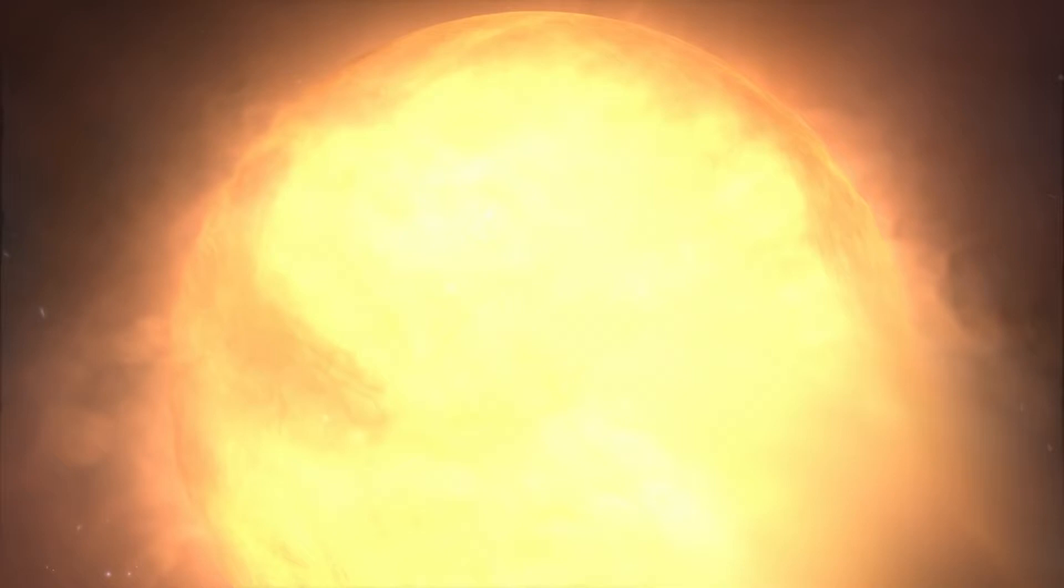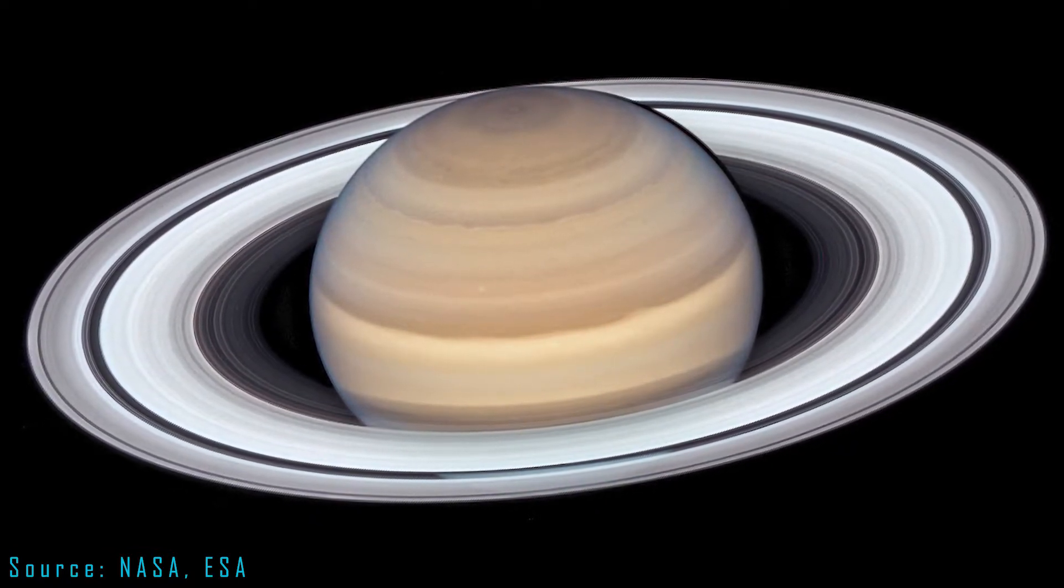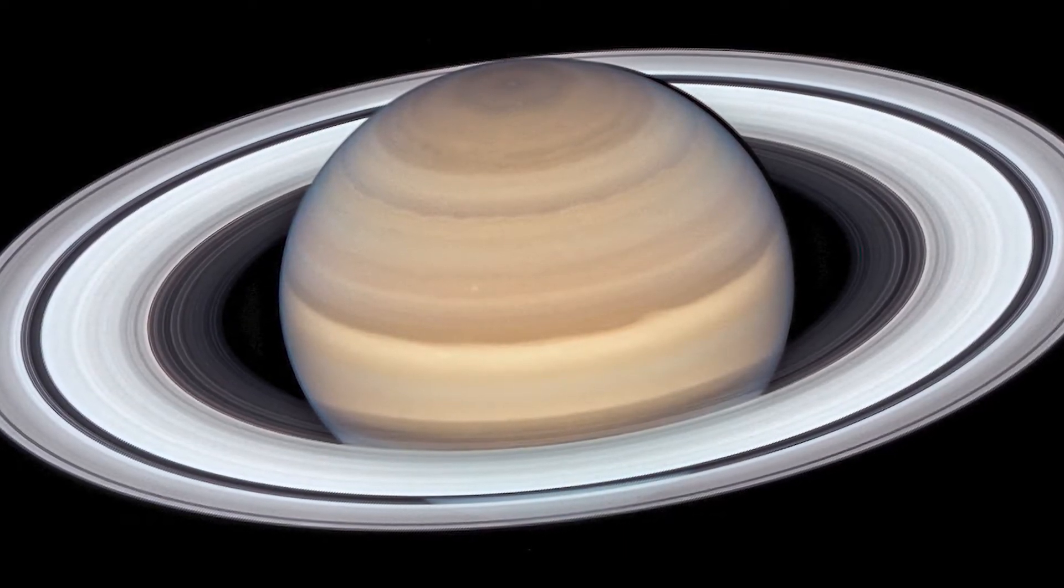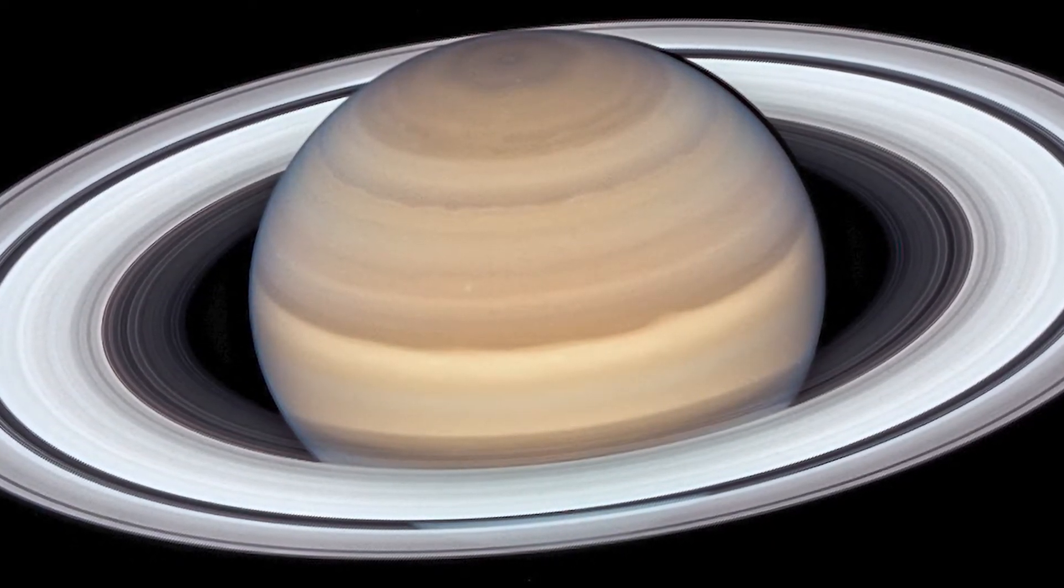Initially the two planets were gas giants similar to Jupiter or Saturn in our solar system. The planets had a solid core in the center surrounded by gas. But during the red giant phase the star stripped away all the gas.